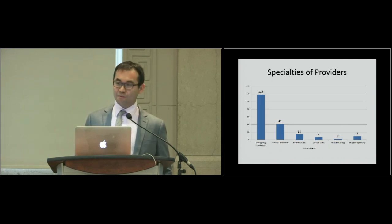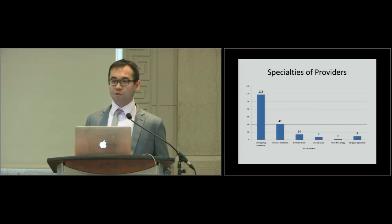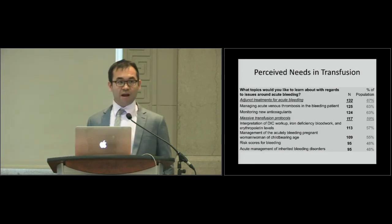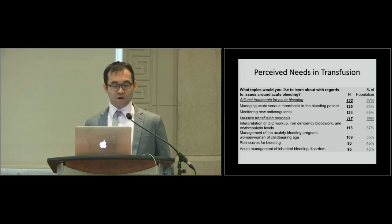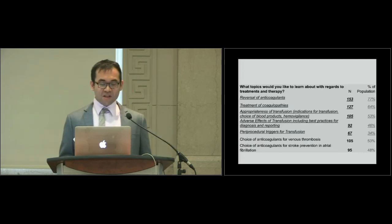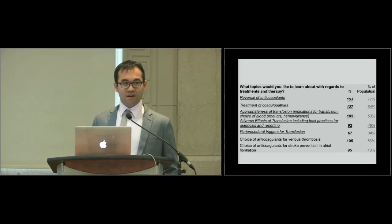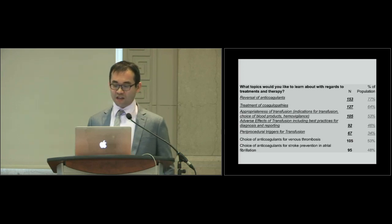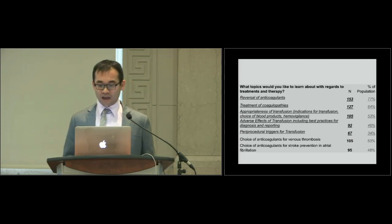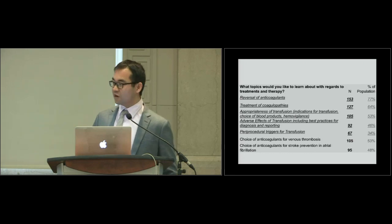The specialties of providers that responded were emergency medicine physicians and internal medicine sub-specialties. The perceived needs around acute bleeding showed most interest in adjunct treatments and massive transfusion protocols. For treatments and therapy, reversal of anticoagulants and treatment of coagulopathies garnered the most interest. However, appropriateness of transfusion, adverse effects of transfusion, and periprocedural triggers for transfusion all had much lower rates of interest—around 30 to 50%—which leads very well to our unperceived needs.